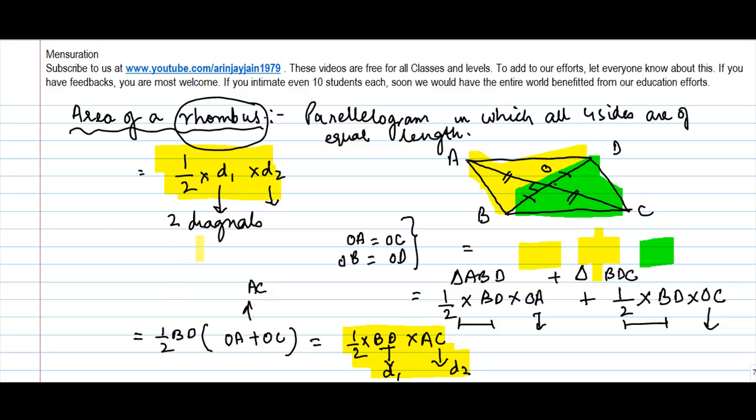So area of a rhombus is equal to half into the product of the length of its diagonals.